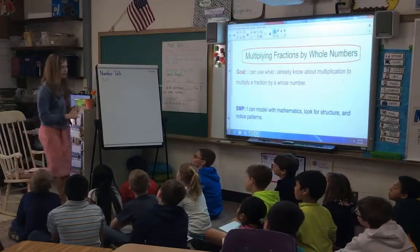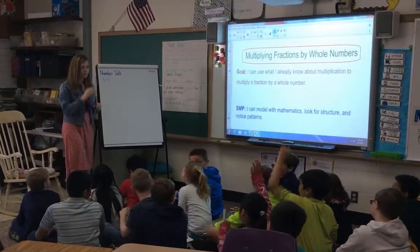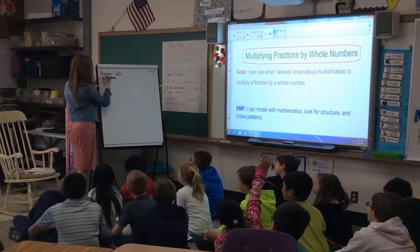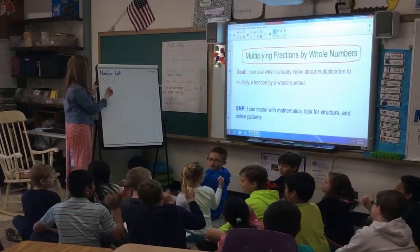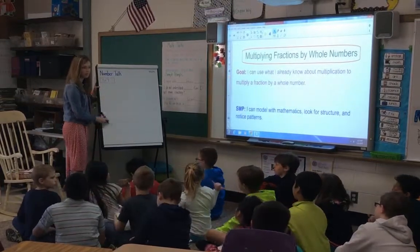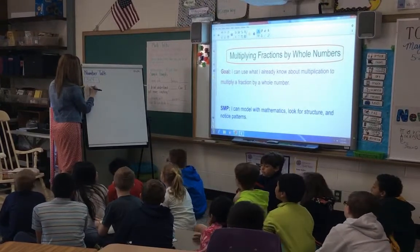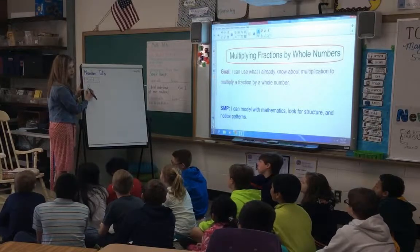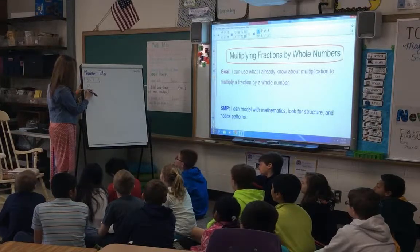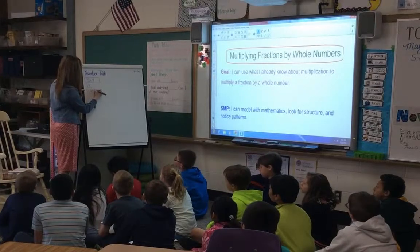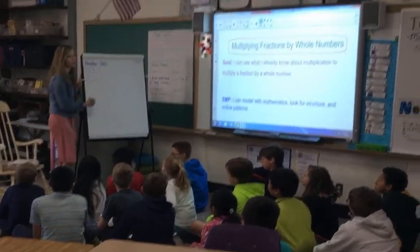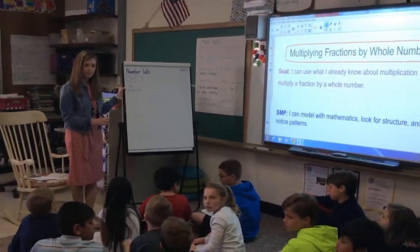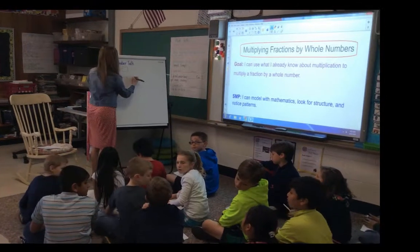Okay, who has their answer? Drake? Three times four is 12. If you agree with Drake, please show him. Drake, how did you get 12? I did three... Can you tell me more about how you did that? Three plus three? Is there another way you can find 12? Kaden? You can do four plus four plus four.